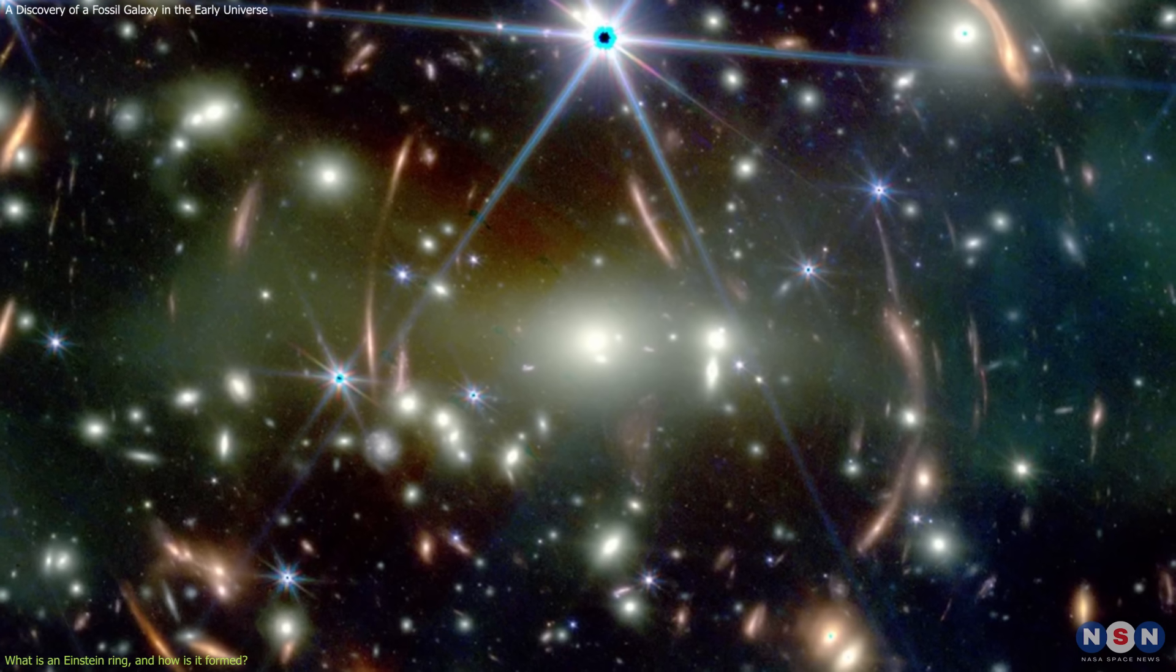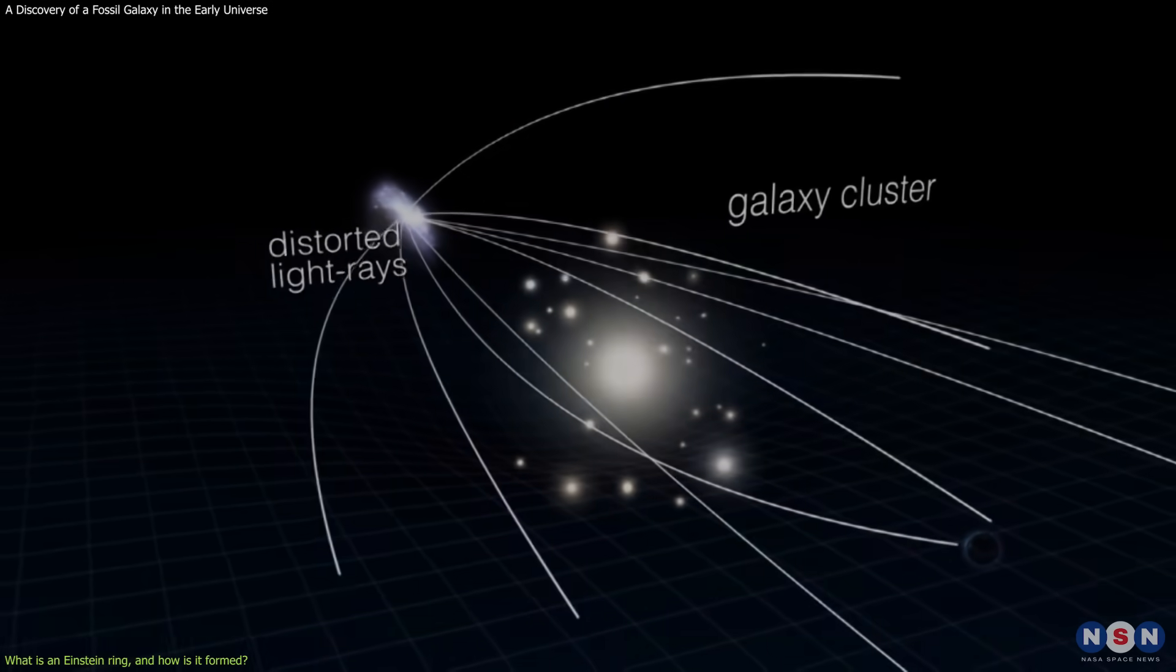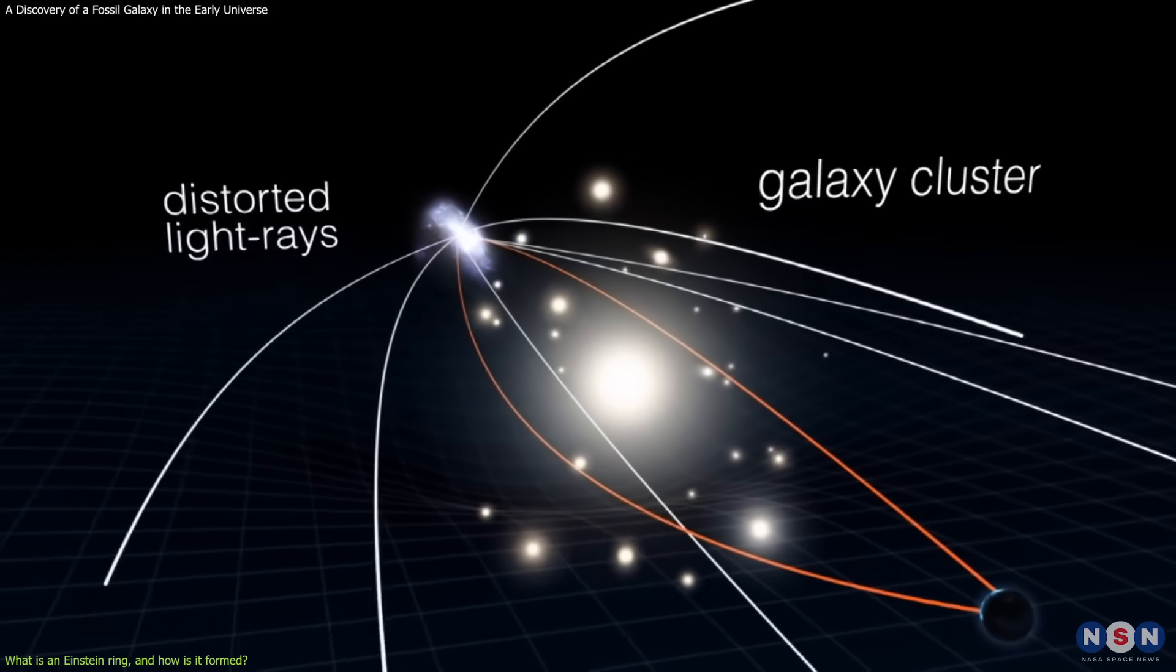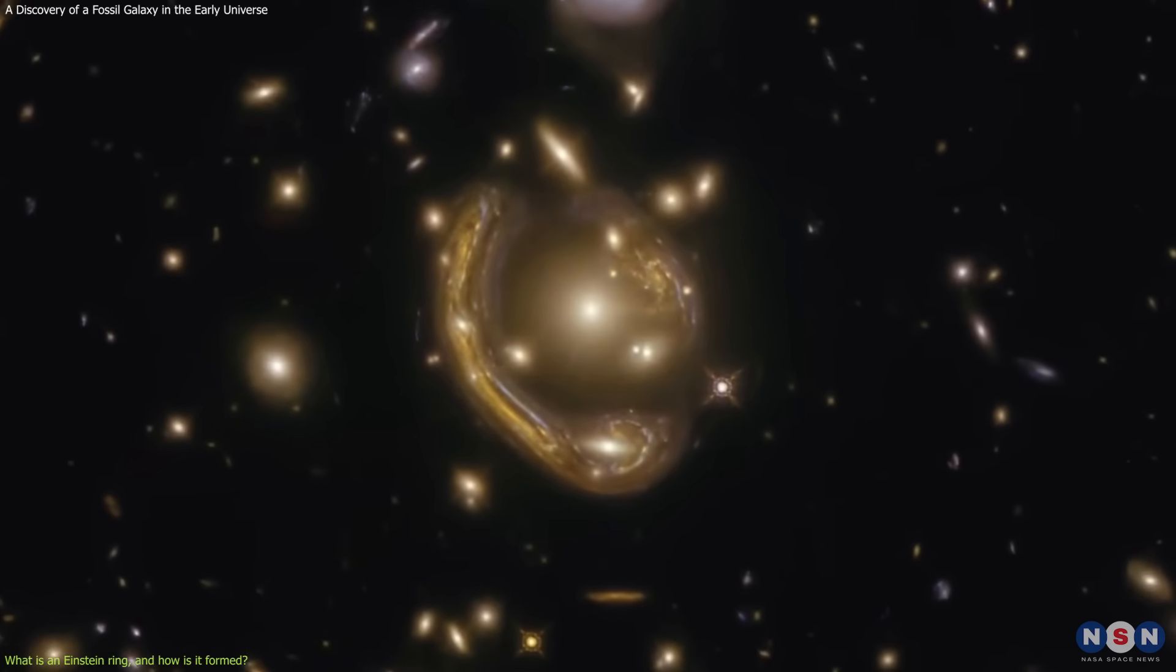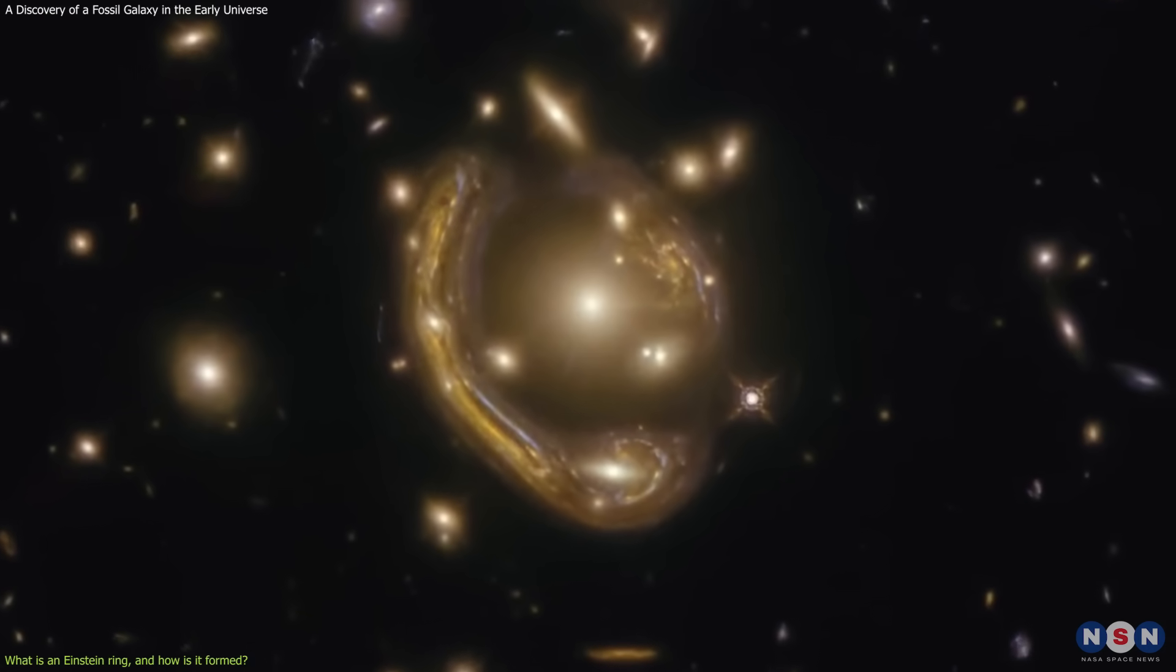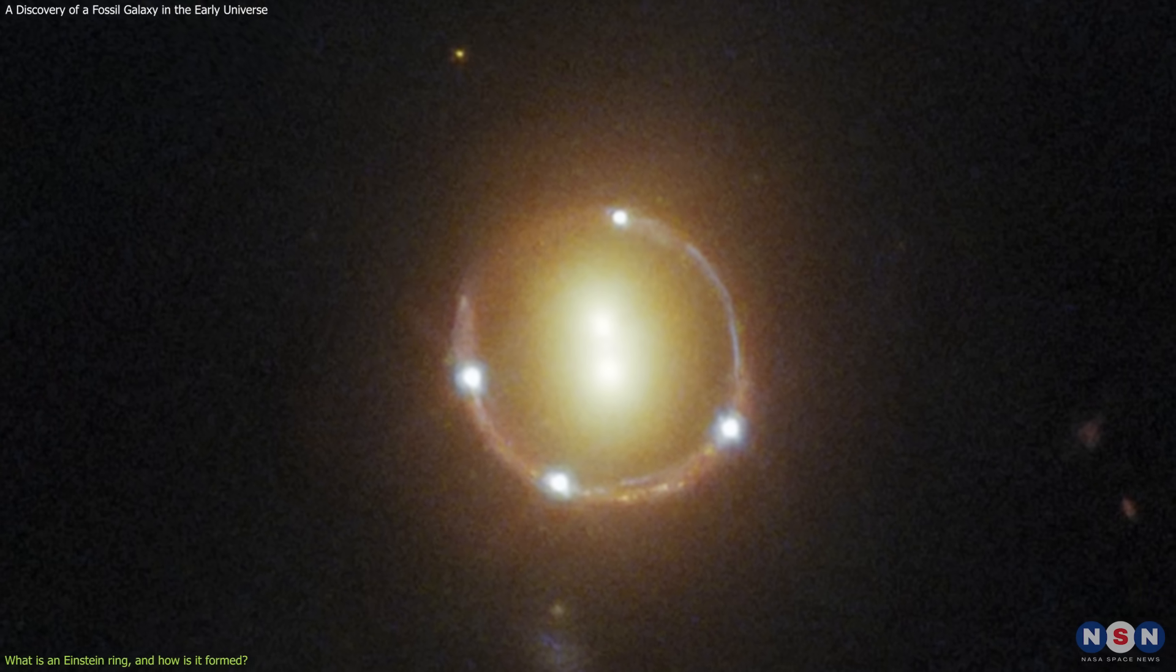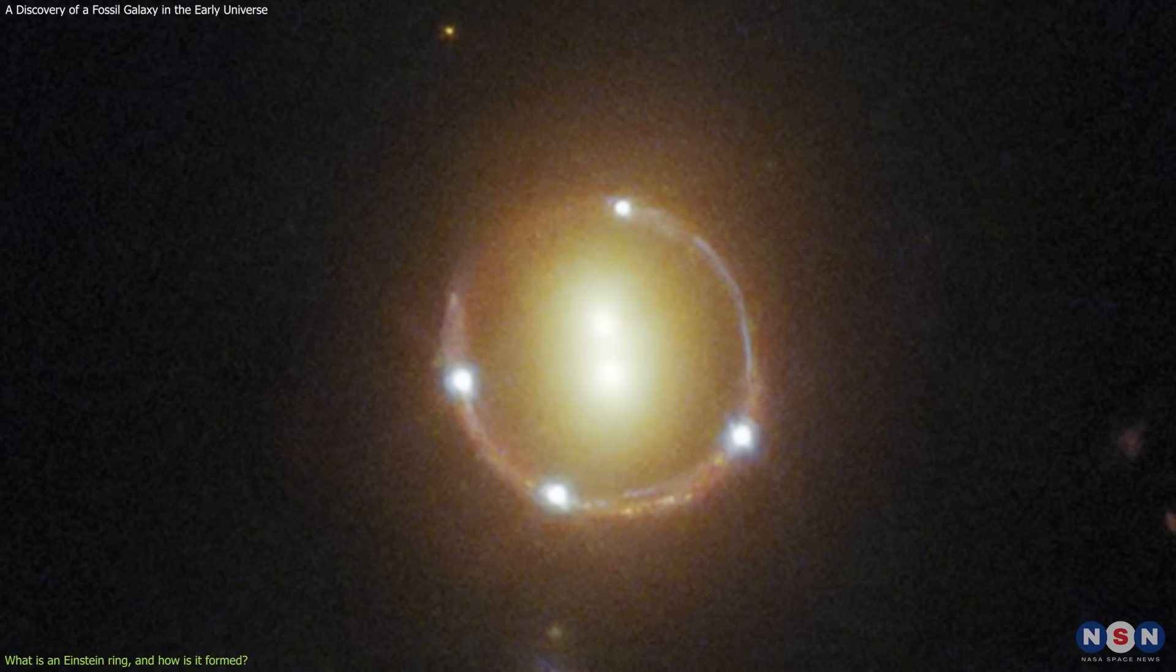In some rare cases, when the two galaxies are perfectly aligned, the light from the farther galaxy can form a ring around the closer galaxy. This is called an Einstein ring, and it is one of the most beautiful and fascinating phenomena in the universe.